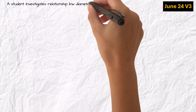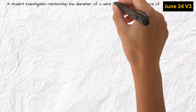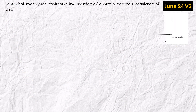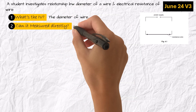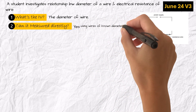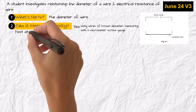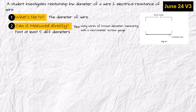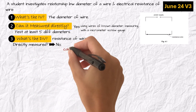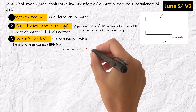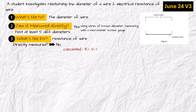For the June exam, Variant 3, a student investigates the relationship between the diameter of a wire and its electrical resistance. Time to break it down using the full seven-step method. Number one: what's the independent variable? The diameter of the wire. Number two: can you measure it directly? Yes, using wires of known diameter or by measuring with a micrometer screw gauge. I will test at least five different diameters. Number three: what's the dependent variable? The resistance of the wire. Is it directly measured? No — it is calculated using the formula R = V ÷ I, where voltage is measured using a voltmeter and current is measured using an ammeter.